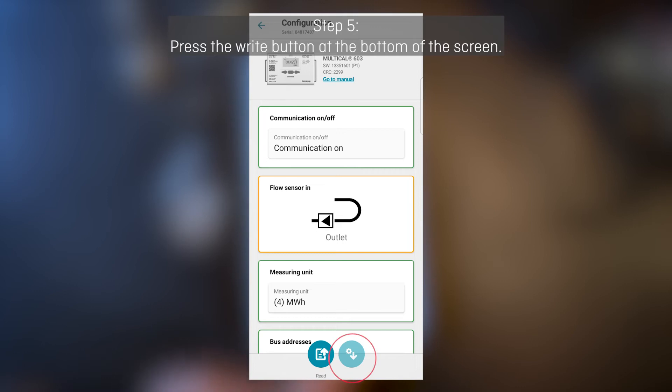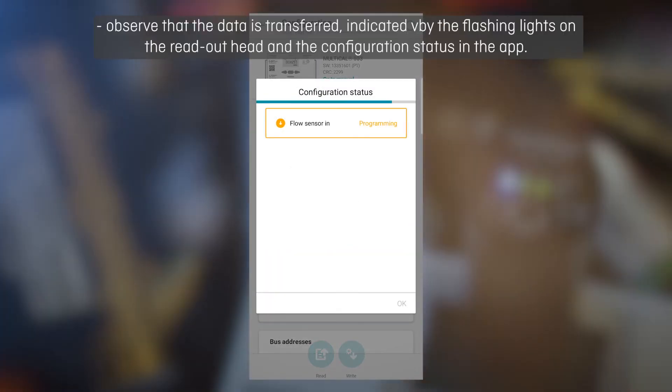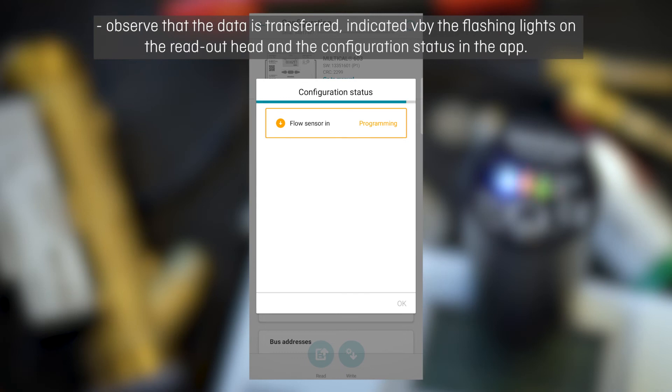Step 5. Press the white button at the bottom of the screen. Observe that the data is transferred, indicated by the flashing lights on the reader head and the configuration status in the app.